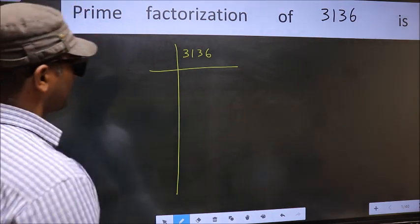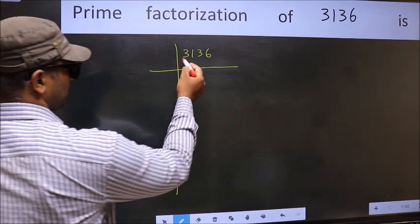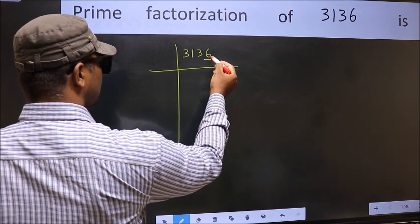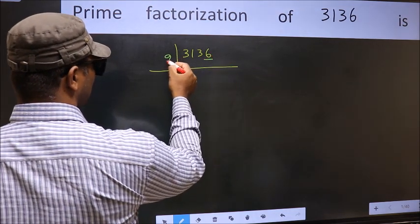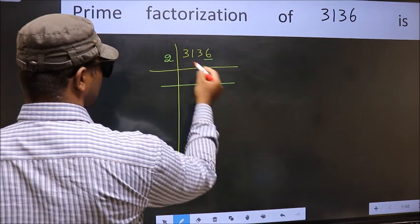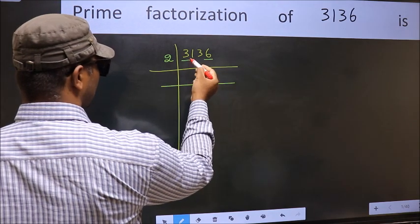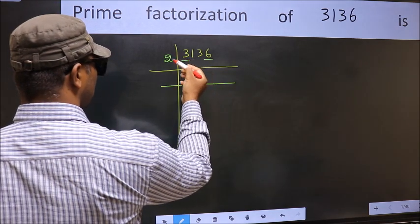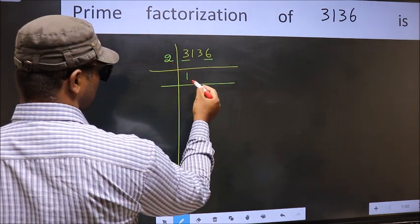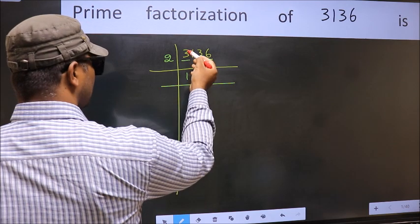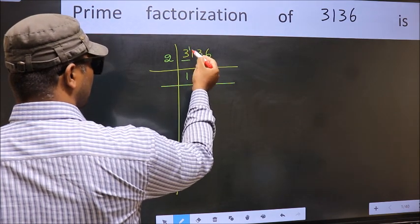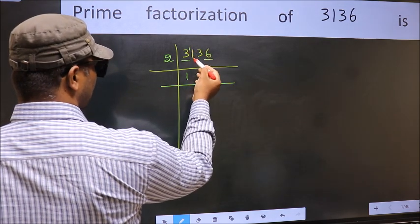Next, in this number, the last digit is 6, so take 2. First number 3 — a number close to 3 in the 2 table is 2×1=2. 3 minus 2 is 1, carried forward 11.